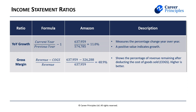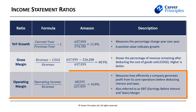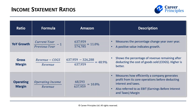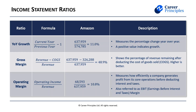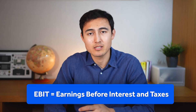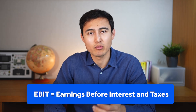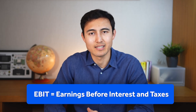Another common ratio is the operating margin. The formula is operating income divided by revenue, and it tells us how efficiently a company generates profits from its core business operations. This operating income is also sometimes referred to as EBIT — earnings before interest and taxes.